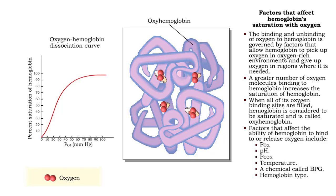Factors that affect the ability of hemoglobin to bind to or release oxygen include partial pressure of oxygen, pH, partial pressure of carbon dioxide, temperature, a chemical called bisphosphoglycerate, or BPG, and hemoglobin type.